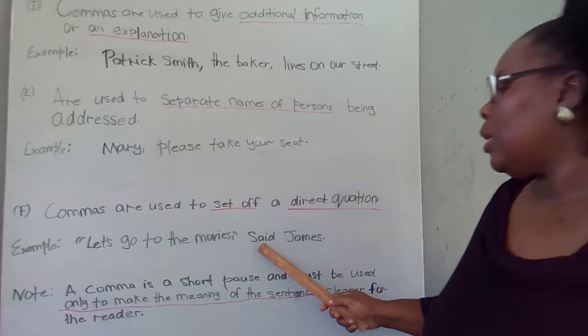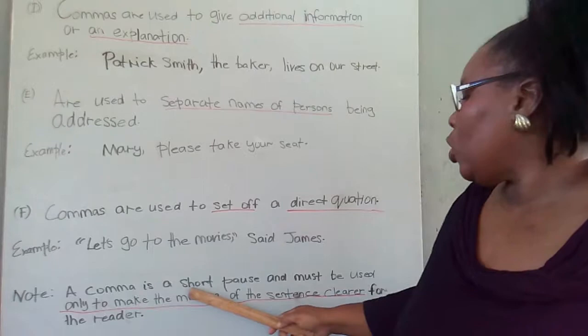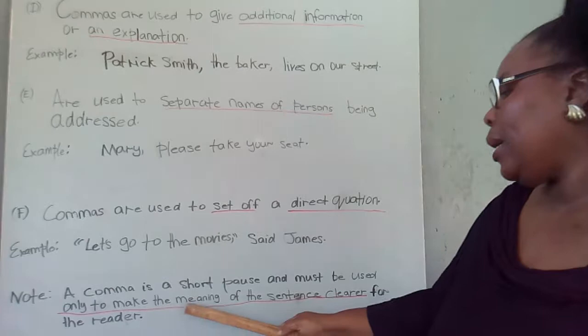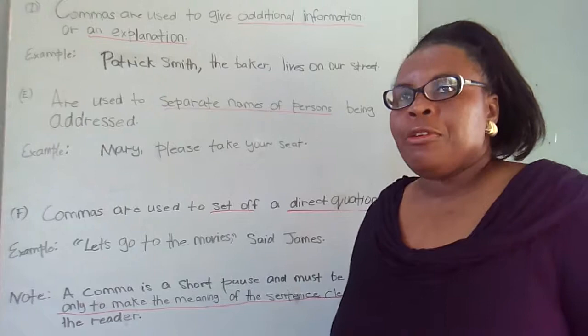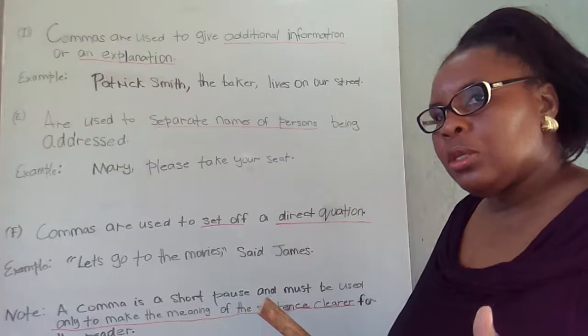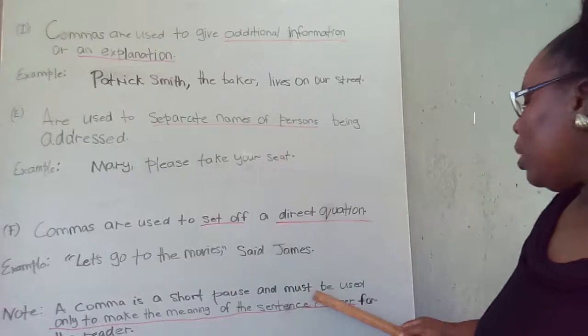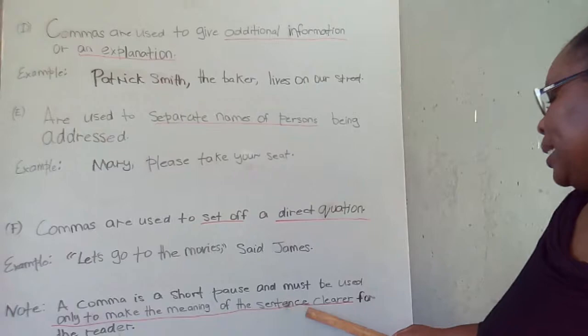A comma is a short pause and must be used only to make the meaning of the sentence clearer for the reader. Whenever you're writing and you want the person to understand exactly what you're saying, you put a comma to separate the two different ideas that you're stating. So a comma is a short pause — you pause to bring in a new idea.